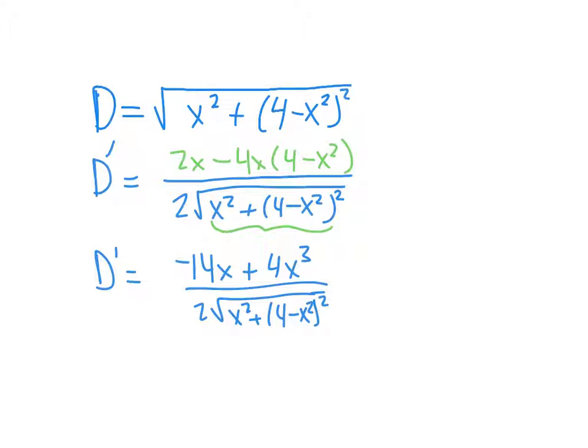What we need to do is find the critical points, meaning we need to set this thing equal to 0. When you have a rational function and you want to find the zeros, you look at the numerator. So I'm just going to set this numerator equal to 0. So I'm going to have 4x³ - 14x = 0, which factors to (4x² - 14) times x.